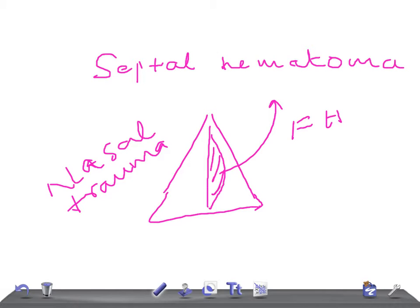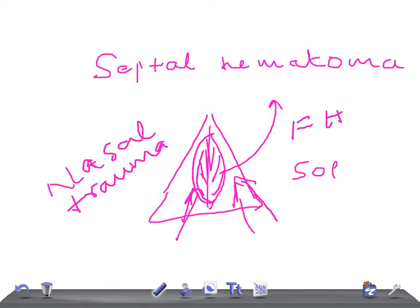When you examine the swelling, it is a smooth, rounded swelling on the nasal septum. It is a fullness on the nasal septum — visible from either side — making air entry very difficult. When you palpate it, it is soft and fluctuant.